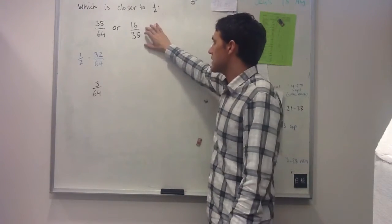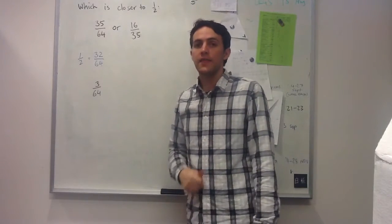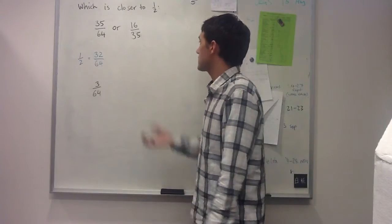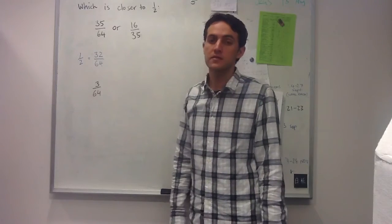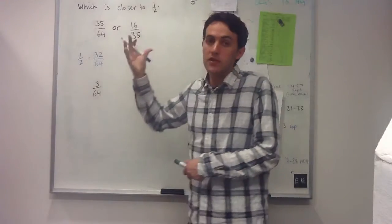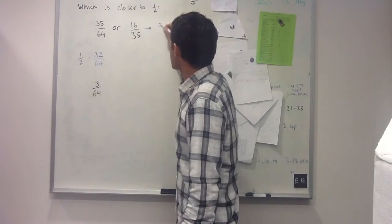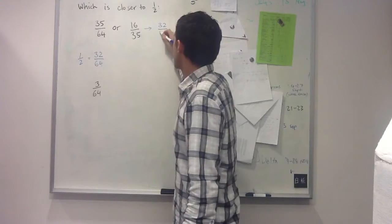With this fraction here, since it's got an odd denominator, there's no equivalent fraction for a half that has denominator 35. So what I first do is just double it so that the denominator becomes even. That gives me 32/70.